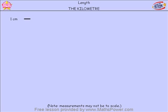So far we have measured things in centimetres and metres. Here is a black line on your screen that I have ruled at one centimetre. But remember, because of different screen sizes on different computers, the measurements may not be to scale. That means this one centimetre line may measure slightly less or slightly more than one centimetre on your screen.